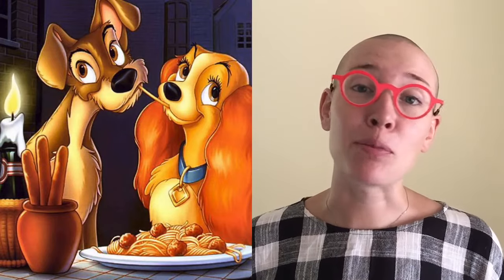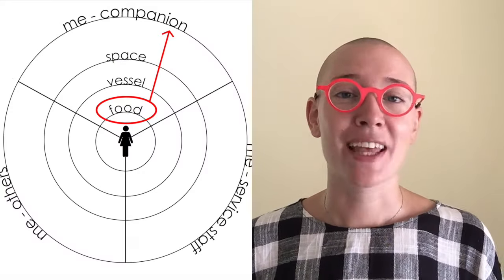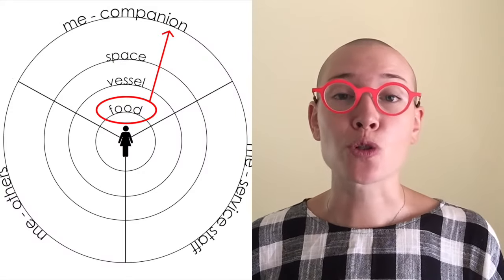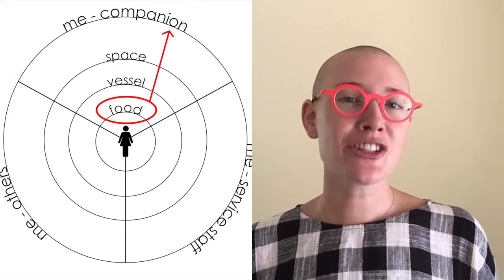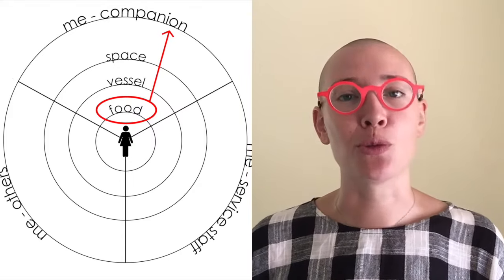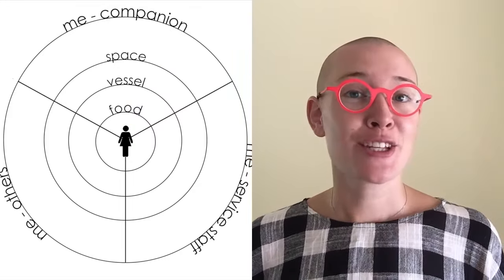And the spaghetti in Lady and the Tramp — a food clearly designed to get people to kiss. That food was purposefully designed to change the interaction between the person and the companion.